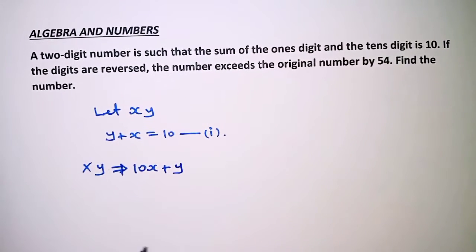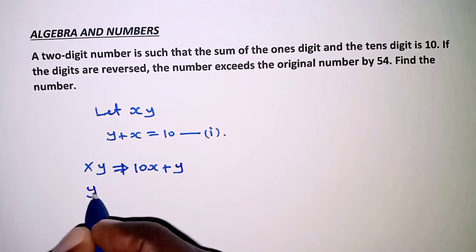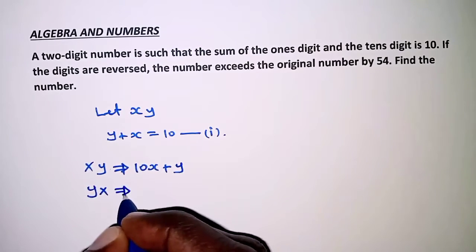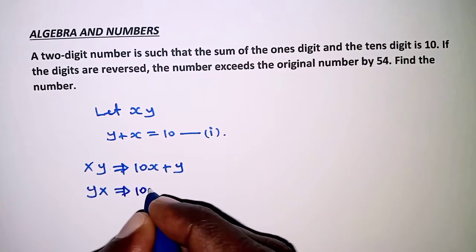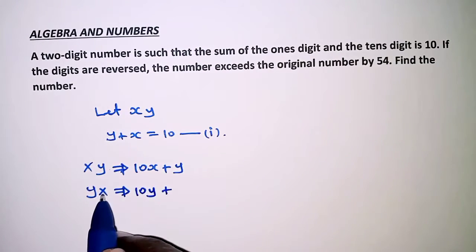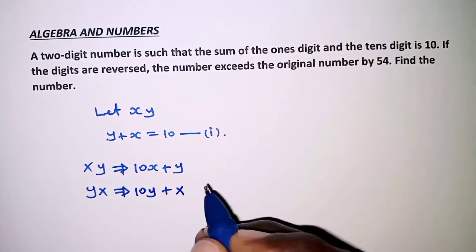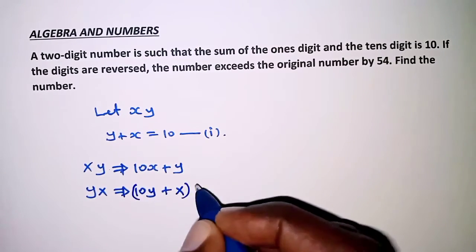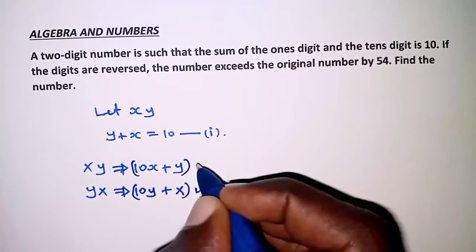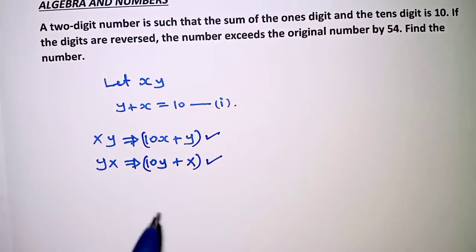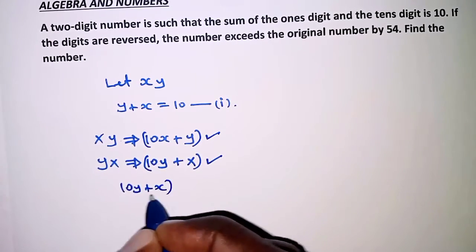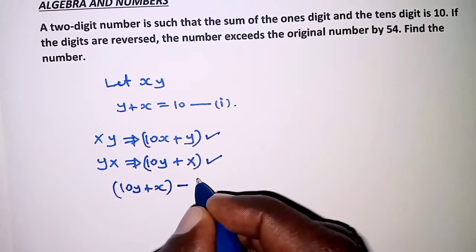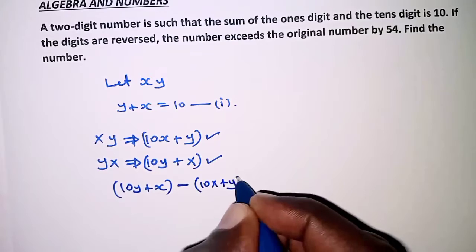When the digits are reversed, we have YX. This means the number becomes 10 times Y plus 1 times X, which is X. After reversing, this value exceeds the original by 54. So we form the equation: 10Y plus X minus the original number 10X plus Y equals 54.